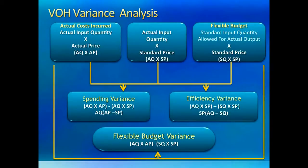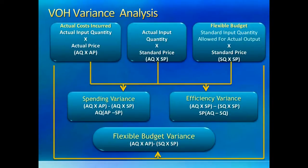Here we have the model for variable overhead variances. Notice that the model is exactly the same as for material and labor variances. If you translate actual quantity as actual hours and actual price as actual rate, then we don't have to change anything in the model. The first variance is called spending variance instead of price variance or rate variance, but the idea is the same — we are comparing what we actually spent with what we were allowed to spend. The second variance is called efficiency variance, since it compares how efficiently we used our input, usually direct labor hours or machine hours. The total of the two variances is called flexible budget variance.